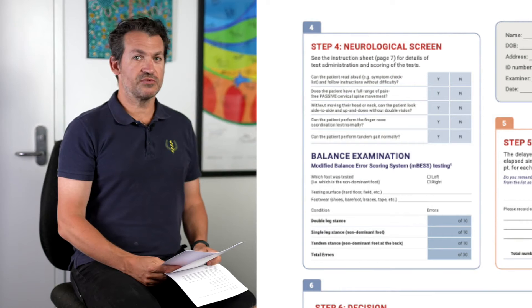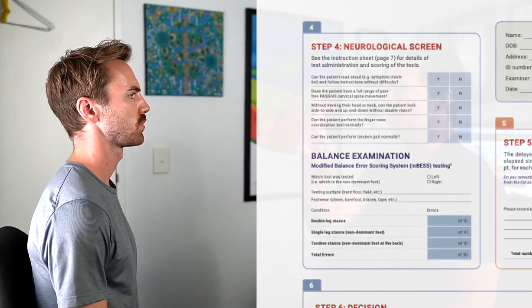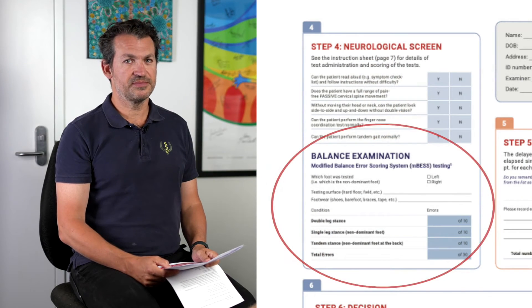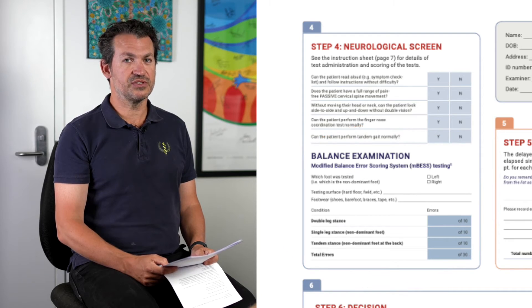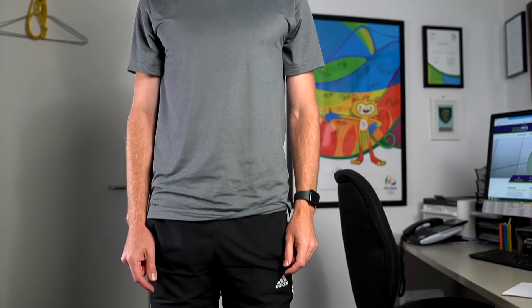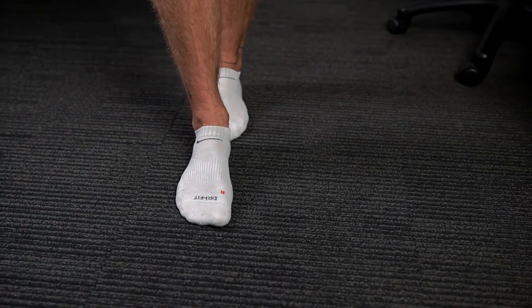Page five begins with a quick neurological screen: Did the patient read out loud the instructions? Is their neck pain-free on passive movement? Do they have double vision? And can they perform the finger-nose-finger test? The next section checks balance using the modified BESS test — this is the most challenging part of the SCAT to perform. The BESS test uses three different stances to assess balance. First is the double leg stance, next is the single leg stance, and last is the tandem stance with the dominant foot at the front. Each position is tested over 20 seconds, so you will need a timer, watch, or phone.